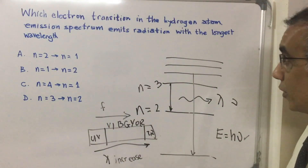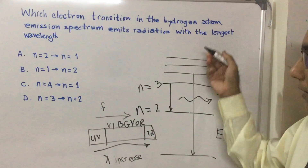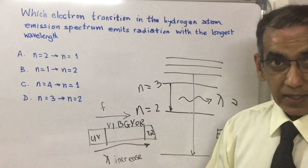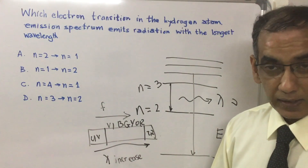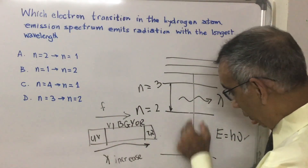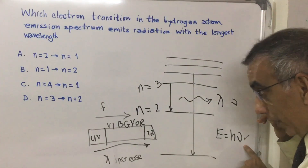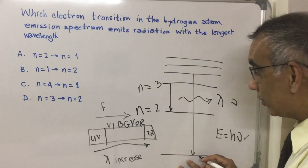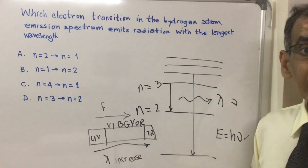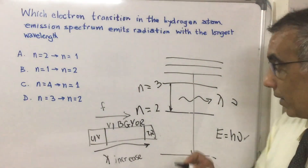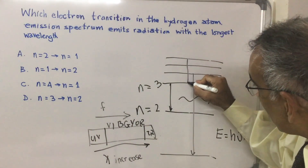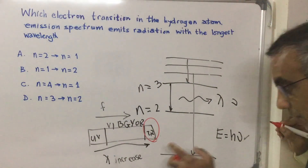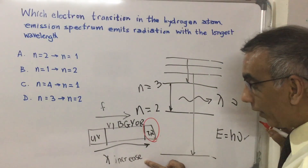The question asks which electron transition emits radiation with the longest wavelength. Transitions to n=1 are high frequency with quite short wavelengths, so it's not going to be anything ending at n=1. Transitions from higher levels to n=3 would give you lines in the infrared part of the spectrum, which is where you have large wavelengths and low frequency.